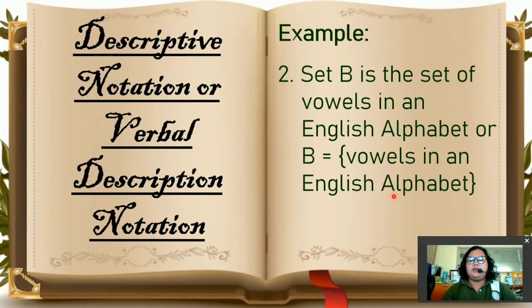Number two, set B is the set of vowels in an English alphabet. Or, capital B equals, we use the braces and we write the description inside the braces. Vowels in an English alphabet.